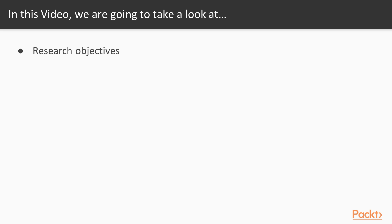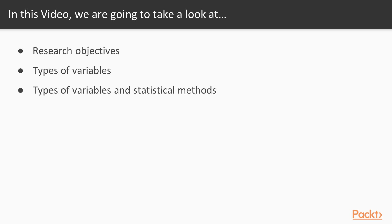We're going to talk about inferential statistics, and we're first going to start by talking about the importance of having well-defined research objectives. After that, we're going to talk about the different types of variables — sometimes when you're doing your research, you could have what are called dependent and independent variables. We'll also talk about how the type of independent and dependent variable interacts with the concept of level of measurement, which allows us to determine which statistical tests and statistical methods we can use.